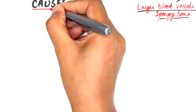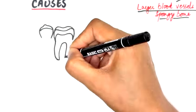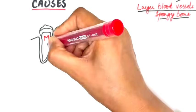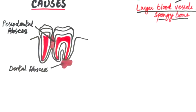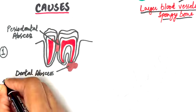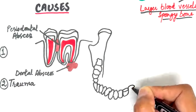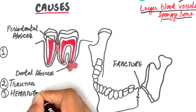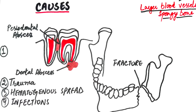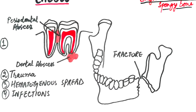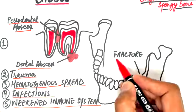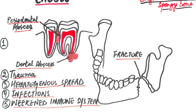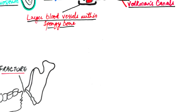Looking at the causes of osteomyelitis, most cases in the jaw are caused by bacterial infections, primarily from untreated dental or periodontal abscesses. Other causes include trauma causing fractures, hematogenous spread, and infections from nearby areas like the sinuses or throat. Conditions such as a weakened immune system and chronic diseases like diabetes and malnutrition can increase the risk.